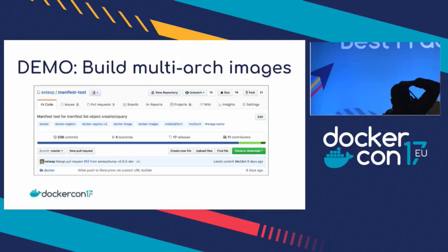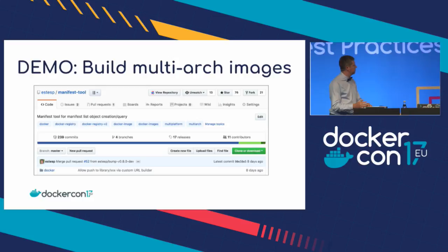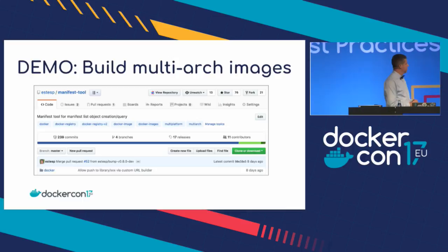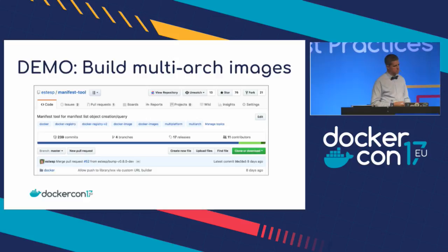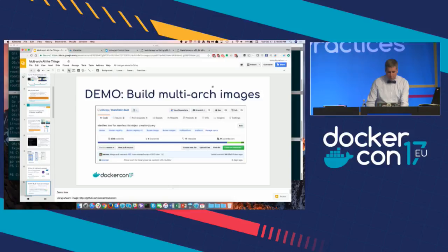Let's do a quick demo. The manifest tool is something I put together that interacts with the registry with this new object type — the manifest list. This is somewhat temporary because work is happening in the Docker client to add a Docker manifest subcommand that will do much of this work. While that PR is being reviewed, manifest tool is being used in the official image repo and is one of the easiest ways to assemble a set of images into a manifest list.